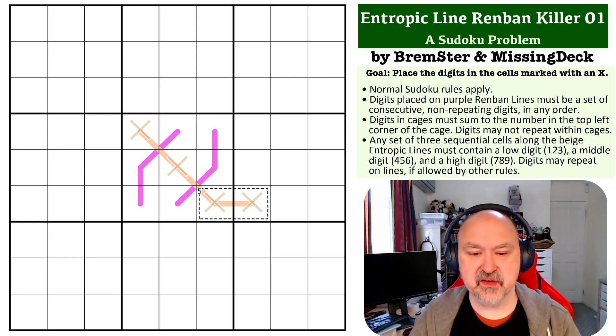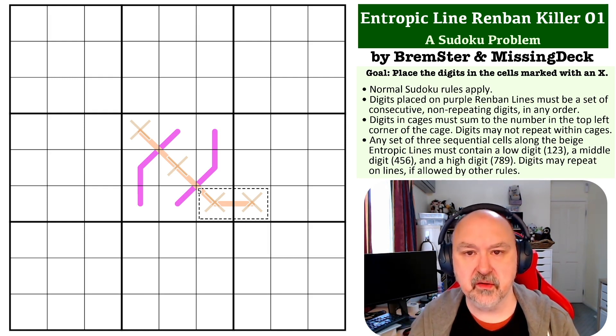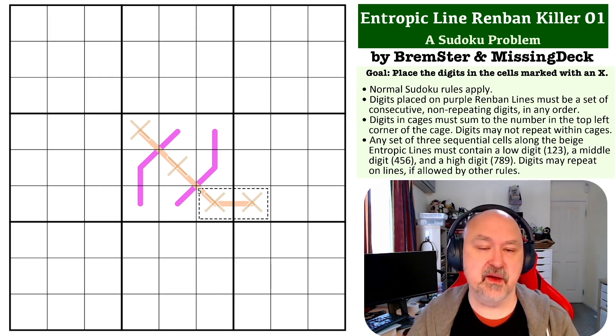The way this one works is you've got the Entropic Lines. Any set of three sequential cells on the Entropic Line, one of them must be low, which is 1 to 3, medium 4 to 6, one of them must be high 7 to 9.